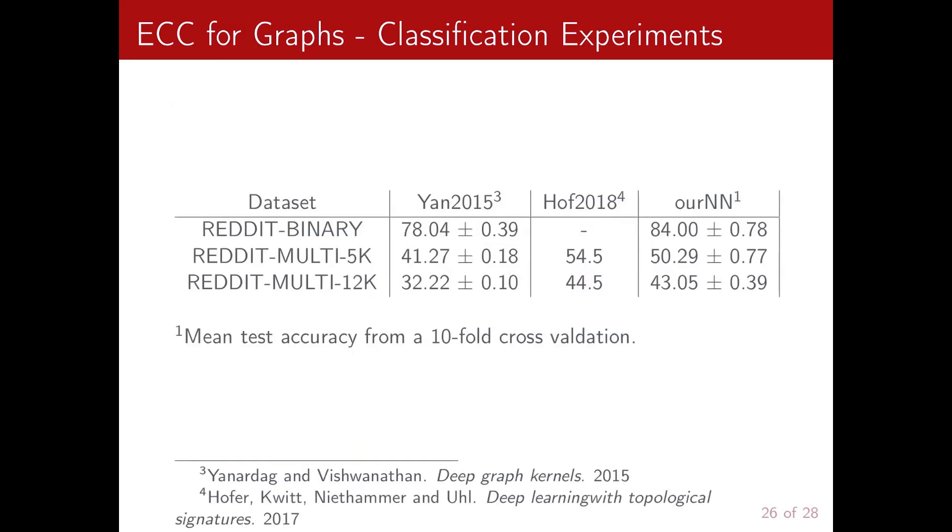And so as you can see here, you can see the results we obtained for three different versions of these datasets. So the Reddit Binary is a binary dataset with two classes. The second one has five classes and the third one has 11 classes. So we are quite happy with the results that we managed to achieve because we have similar performances to Hofer and collaborators that used a deep learning approach with the whole persistence diagram, and we managed to outperform graph kernel based methods.